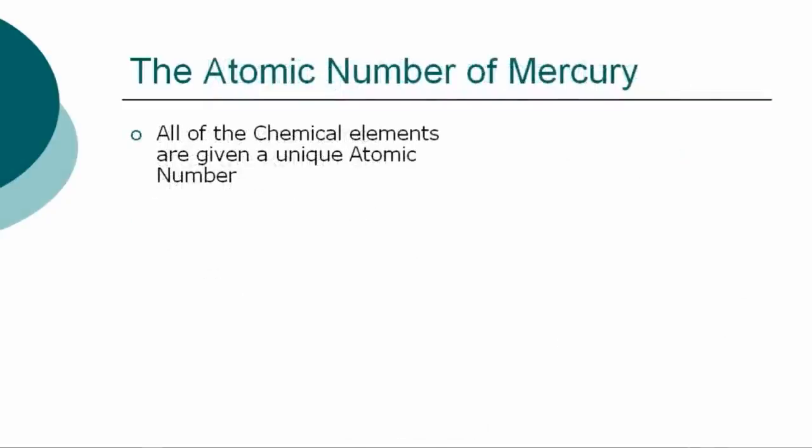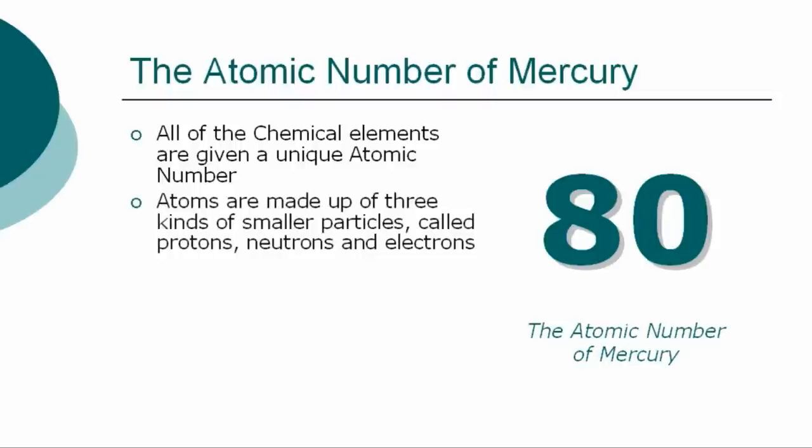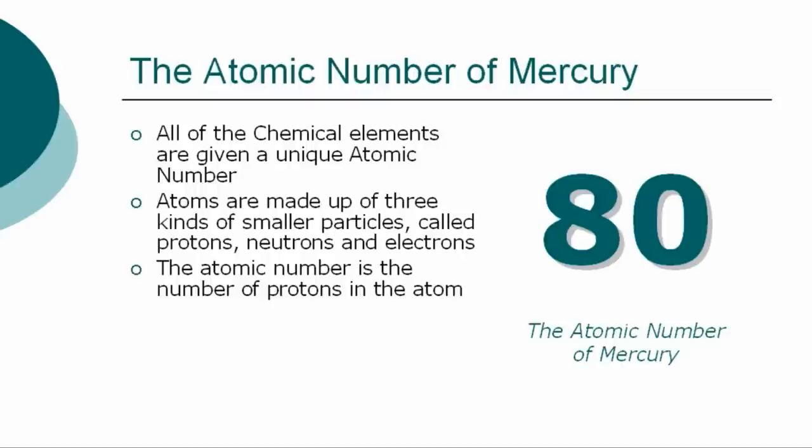All of the chemical elements are given a unique atomic number. The atomic number for mercury is 80. Atoms are made up of three kinds of smaller particles, called protons, neutrons, and electrons. The atomic number is the number of protons in the atom.